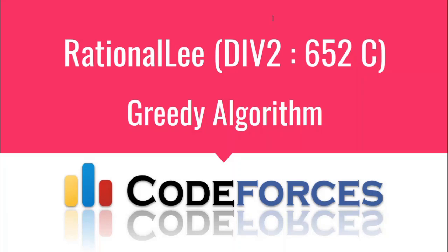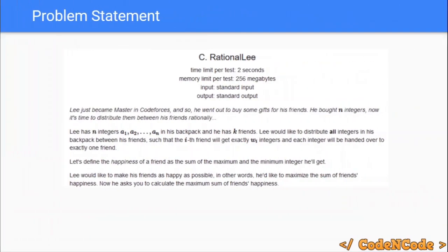Hello guys, this is Code and Code, and this is the video editorial for the problem 'Rationally' taken from Codeforces Div 2 Round 652. The problem gives us two arrays: one array of integers that Lee has with values a1 to an, and Lee has k friends where each friend requires exactly wi integers.